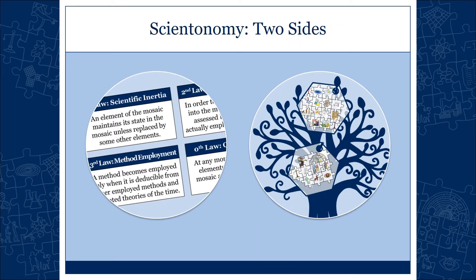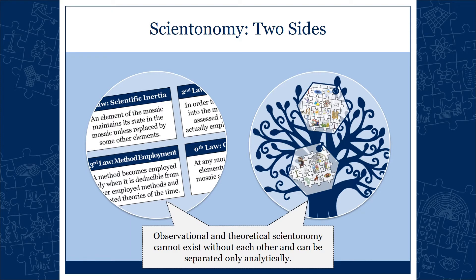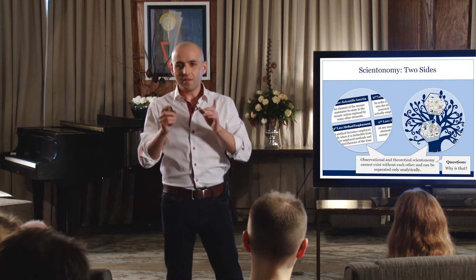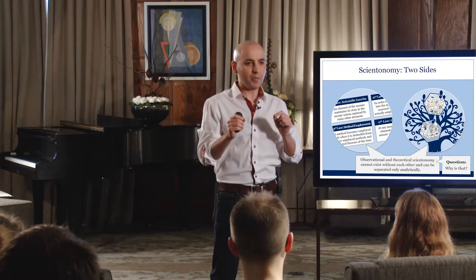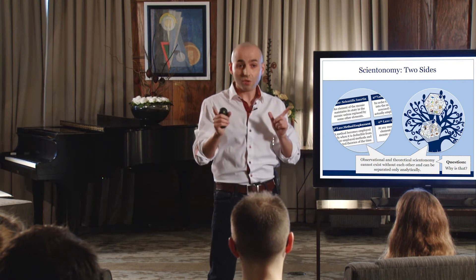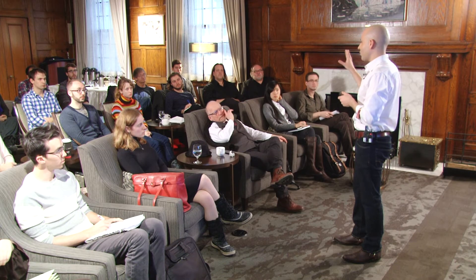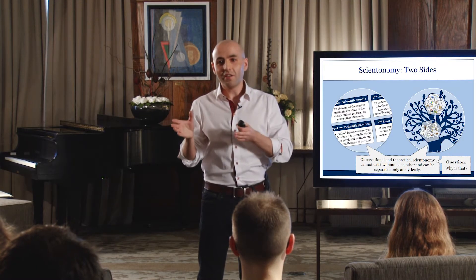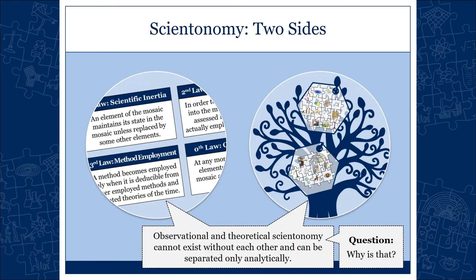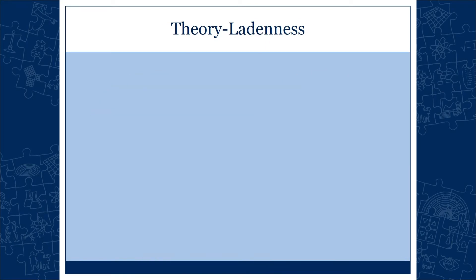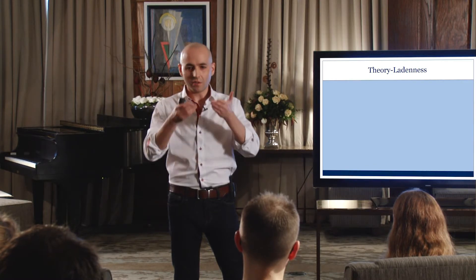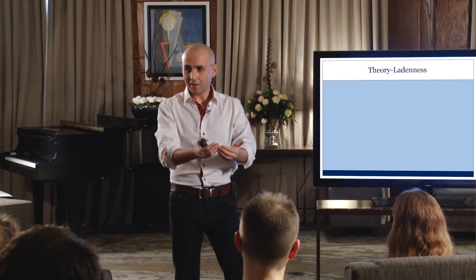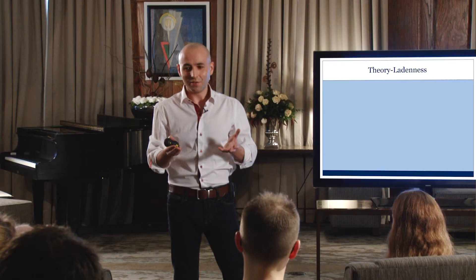You can only have one when you have the other. Observational and theoretical scientonomy cannot exist without one another. Why is that? Why can't you have the tree of knowledge without a proper theoretical foundation? Despite vast historical scholarship, many historians believe you can have proper observational scientonomy without theoretical foundations. This is a common myth that needs to be debunked. There is a famous phenomenon of theory-ladenness — there is nothing you can say about the world unless you have a theory that lets you interpret it.